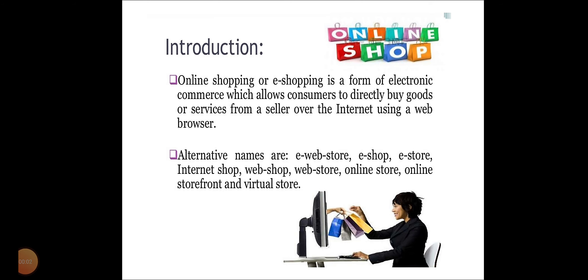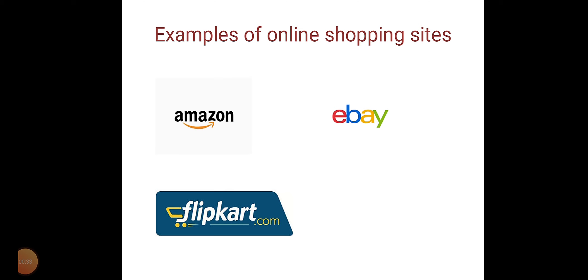Our next topic is online shopping. Online shopping or e-shopping is a form of electronic commerce which allows consumers to directly buy products or services from a seller over the internet using a web browser. For example, consumers can buy items like books, toys, cosmetics, household items, hardware, etc. from online stores. Examples of online shopping sites are Amazon, eBay, Flipkart, etc.